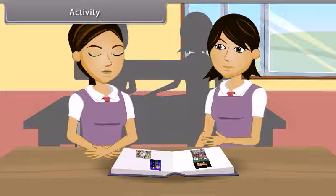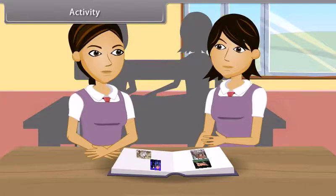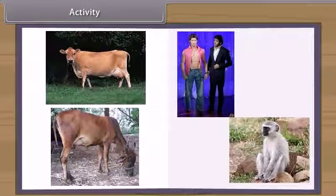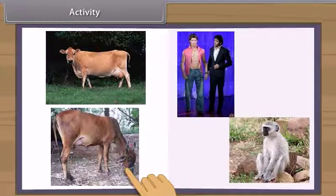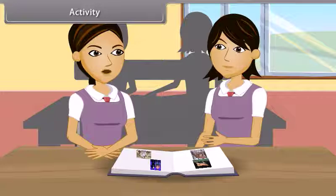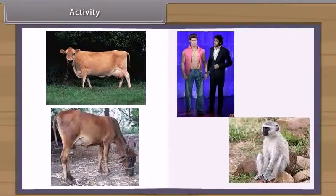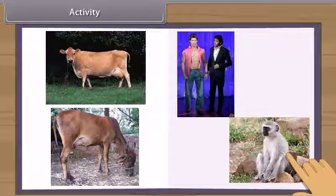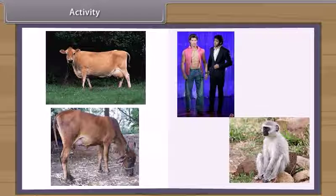Let us do an activity to find out the similarities within a genus and differences among various genera. When we study physical characters of desi cow and jersey cow, we find very few differences. But when we see them in a crowd, jersey cow can be distinguished from a distance due to its height and stature. But when we look at cow and monkey, we find that man resembles more to a monkey than a cow, although all are mammals.